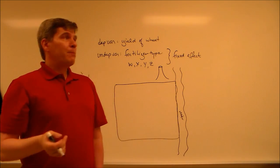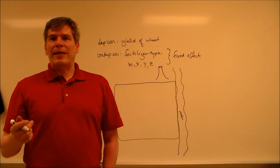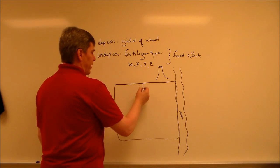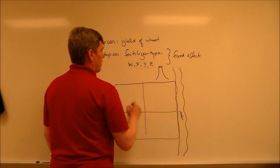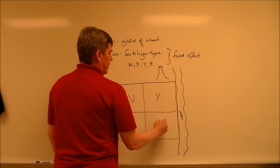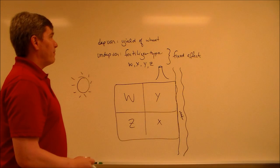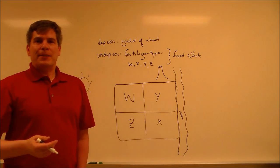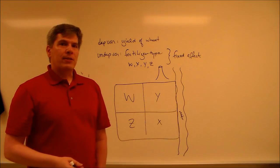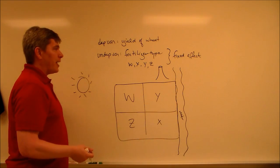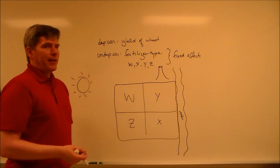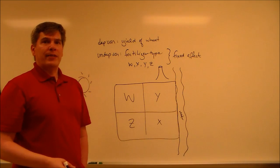If you just do a simple, complete, really randomized design for this, you break this up into four pieces. W, X, Y, Z. Probably that's how it would come out. And you'd grow your wheat with this fertilizer and you'd measure the yield and you'd come to some conclusions.